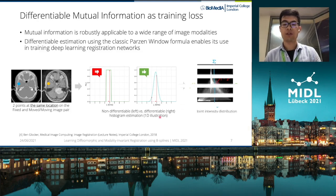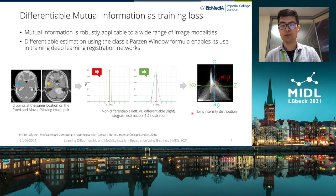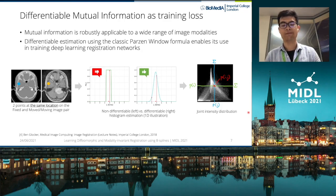Instead, we can use a smooth differentiable density kernel to smooth out the contribution of each sample to the histogram. Doing this for all pairs of points in the overlapping space using separable 1D kernels, we can get a joint distribution of the intensities, which we then marginalize to compute the marginal distributions. We can then use these distributions to compute mutual information.